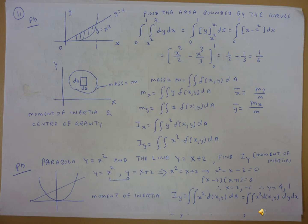So the integration is dy dx. For the inner integral, lower limit x squared and upper limit x. Then the outer integral lower limit 0, upper limit 1, dx. We substitute: in place of y we get x minus x squared. So the integral from 0 to 1 of x minus x squared dx.